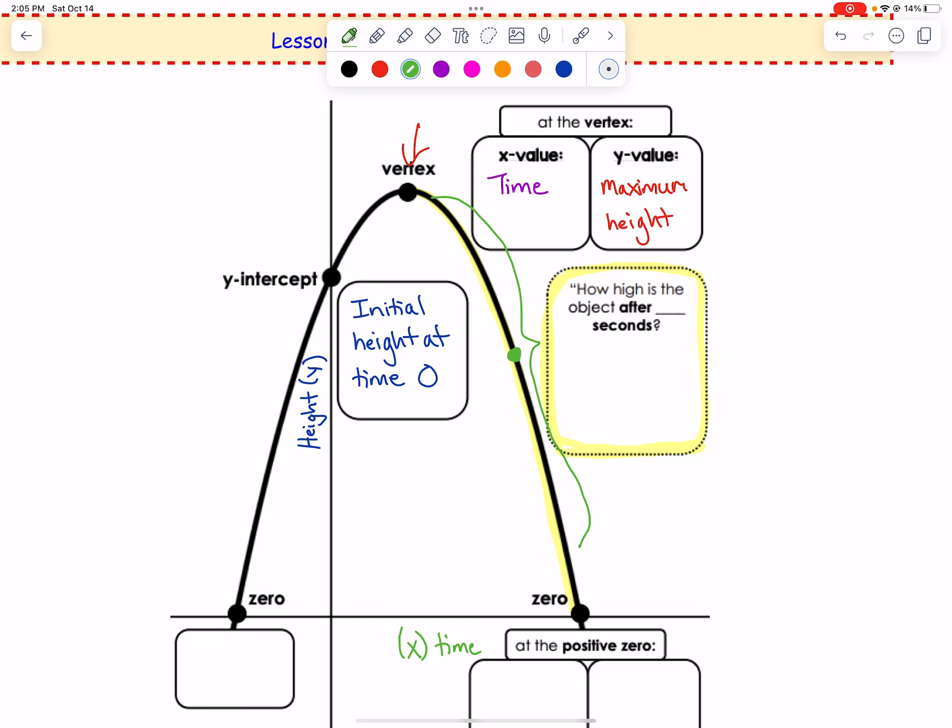How high is the object after a certain amount of seconds would be like a point right here where maybe it says 5, 200. That would mean for your x, after 5 seconds for example, the height is 200 meters. That's just an example of a point on the graph in that area that could tell you an answer to how high it is after a certain amount of seconds.